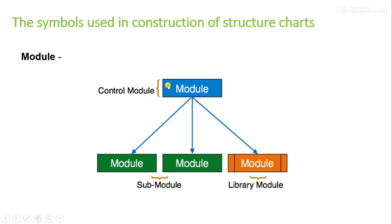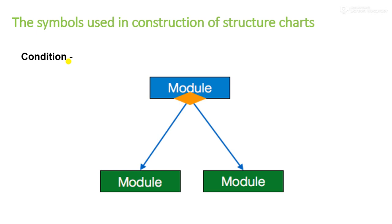The first symbol we can use to draw our structure chart is the module, which is represented using a rectangular box. One module can have sub-modules, and we can represent that hierarchically. Library modules are represented with a different symbol — the main difference is that a library module can be called by any module. Simple modules are represented using a rectangular box, while library modules use their own distinct symbol.